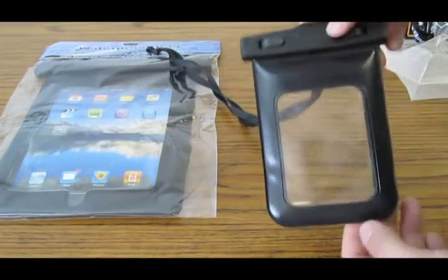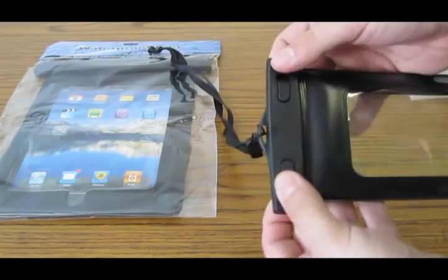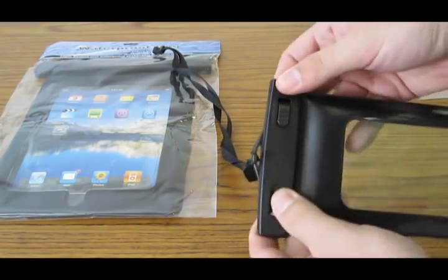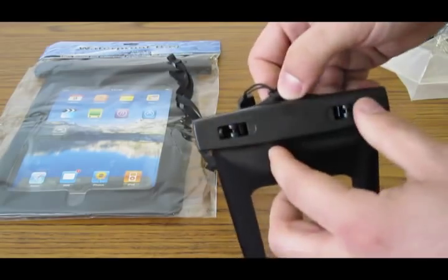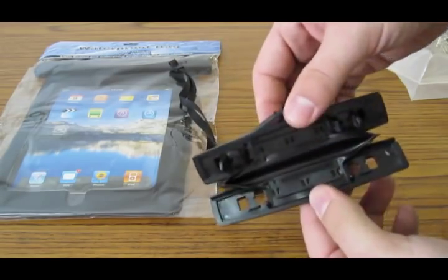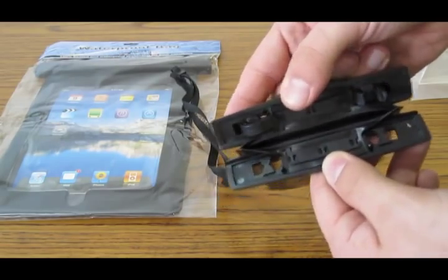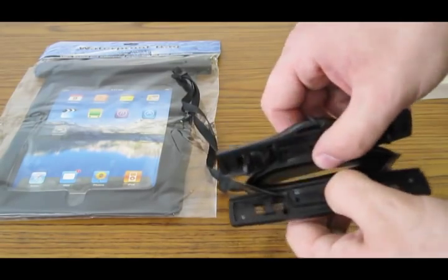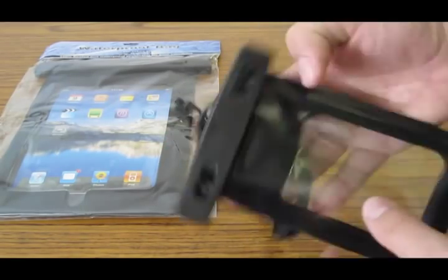And we also have another one for iPhones and for cell phones of similar sizes and MP3 players of similar sizes in black. This one uses a different mechanism. It uses some fasteners that you just rotate that will securely keep it closed and keep any water out of there.